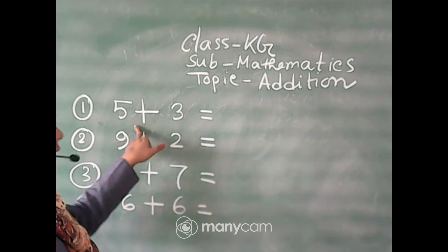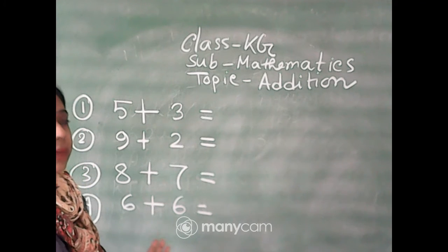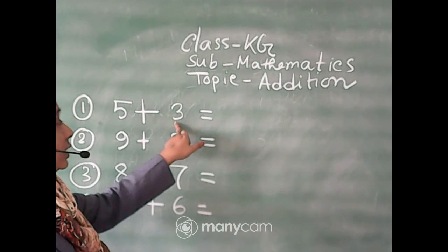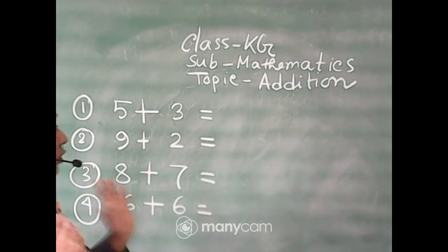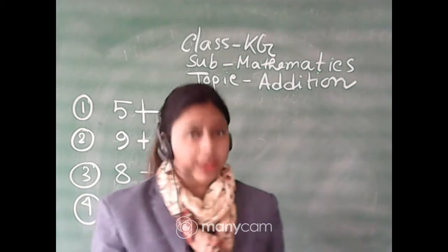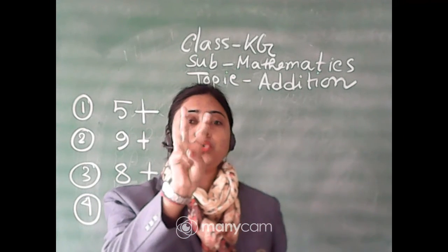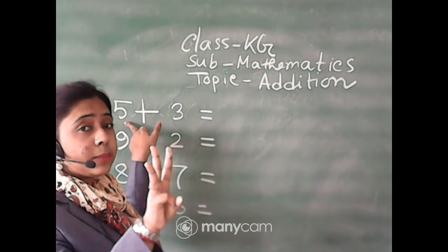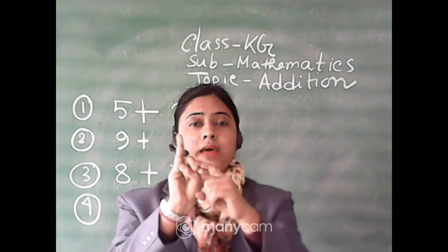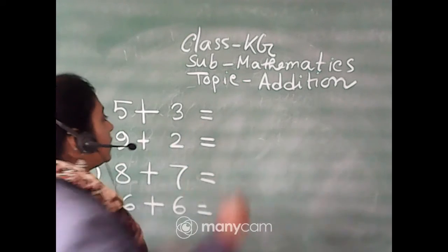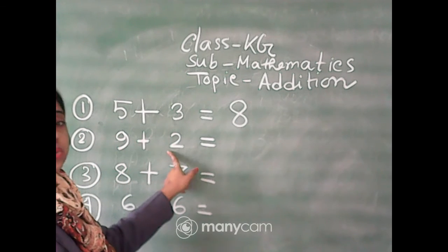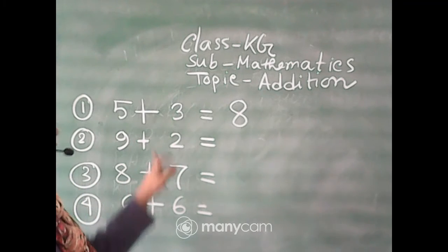First one, number one: five plus three. We will use the same method — find the small number. Here five and three, so three is the small number. I will show three fingers: one, two, three. Then the other number is five, so counting on from three: six, seven, eight. So five plus three is equal to eight. Completed.